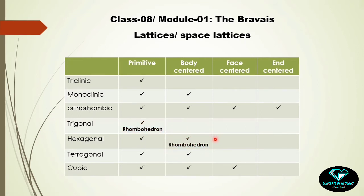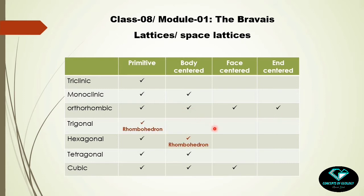The rhombohedron unit cell may be treated as a primitive unit cell in the trigonal system and as a body-centered unit cell in the hexagonal crystal system — you may place it in either. The hexagonal system also has a primitive lattice. The tetragonal system has primitive and body-centered, and the cubic system does not have an end-centered variety. Counting all these gives 14 total lattices. A dedicated class on the trigonal/hexagonal confusion and the rhombohedron unit cell will follow next.